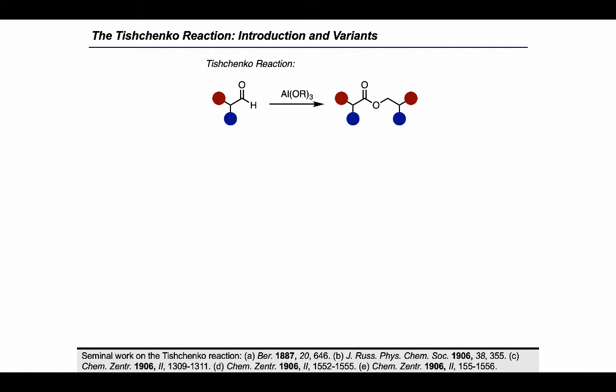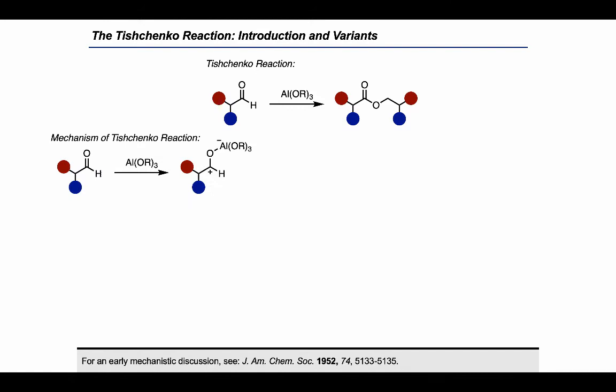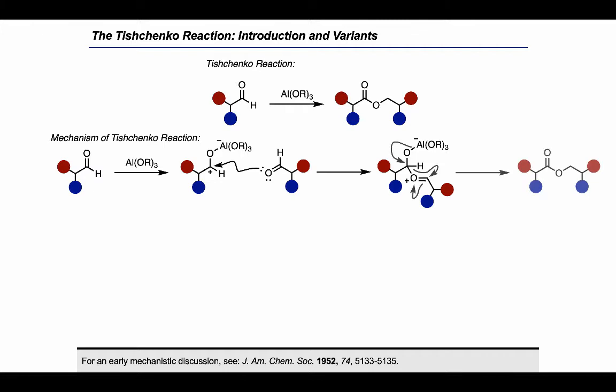As two equivalents of the aldehyde are consumed in this transformation, in principle this can be done in either a homo or crossed fashion. Mechanistically, this transformation occurs by initial activation of the aldehyde to generate an oxocarbenium ion, after which a second aldehyde can act as a nucleophile. This step generates a tetrahedral intermediate, which can collapse via a hydride shift, quenching the charge on the oxonium and generating the product.